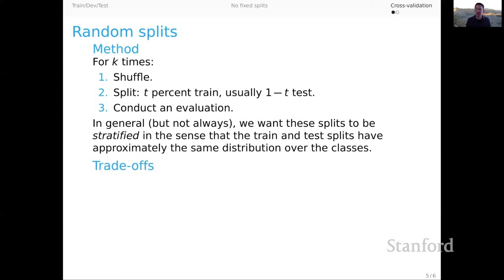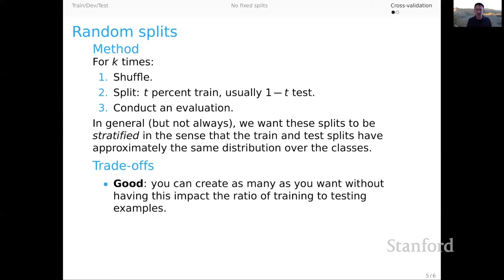The trade-offs for this kind of cross-validation. The good is that you can create as many splits as you want without having this impact the ratio of training to testing examples, right? Because k times we're just going to do a random split and it can be consistent that we do independent of k, 70% train, 30% test, or 50-50, or whatever we decide we want. That's independent of the number of splits that we set.